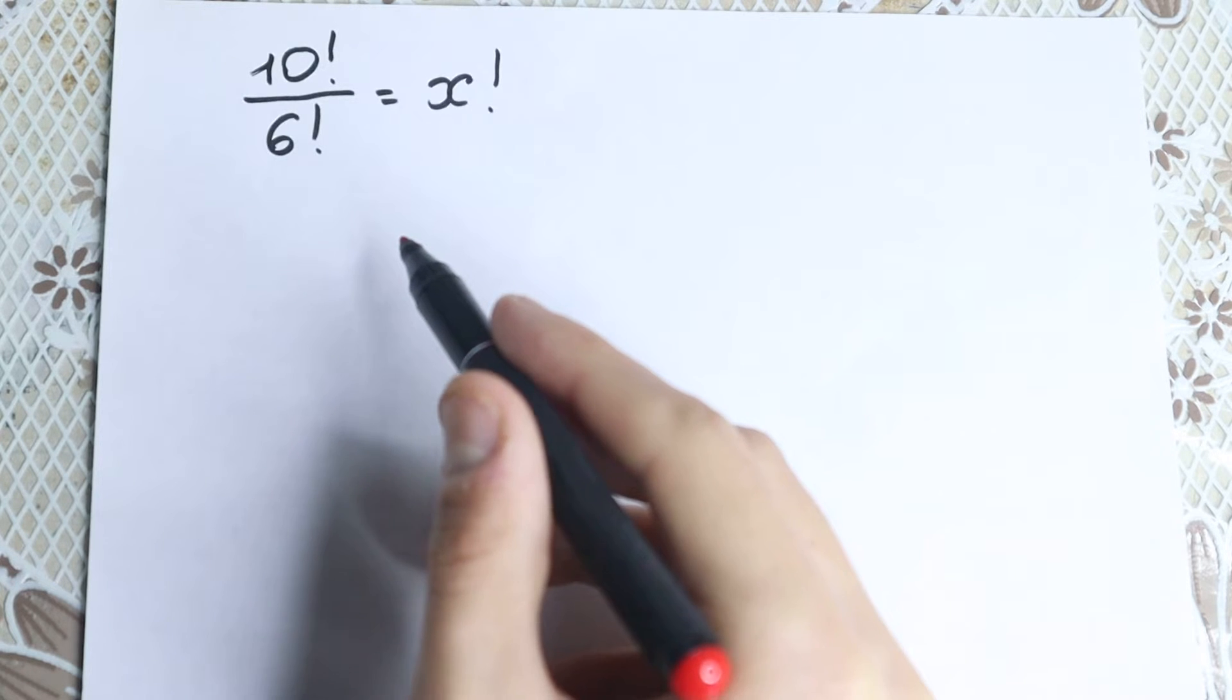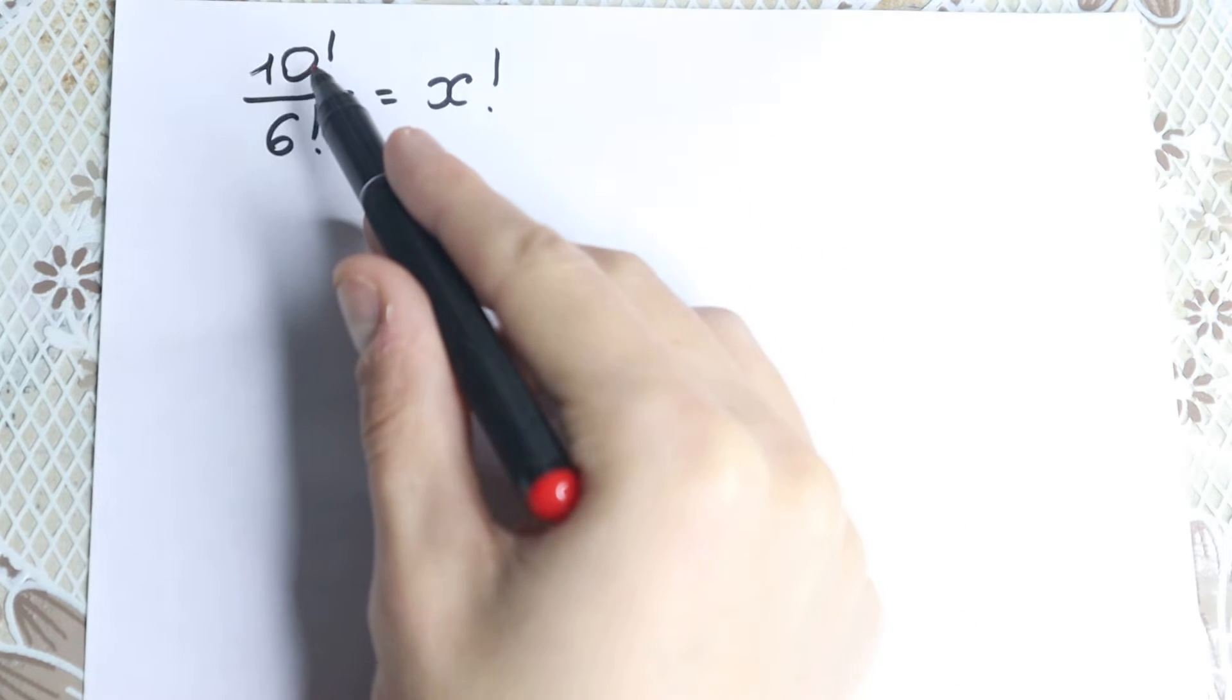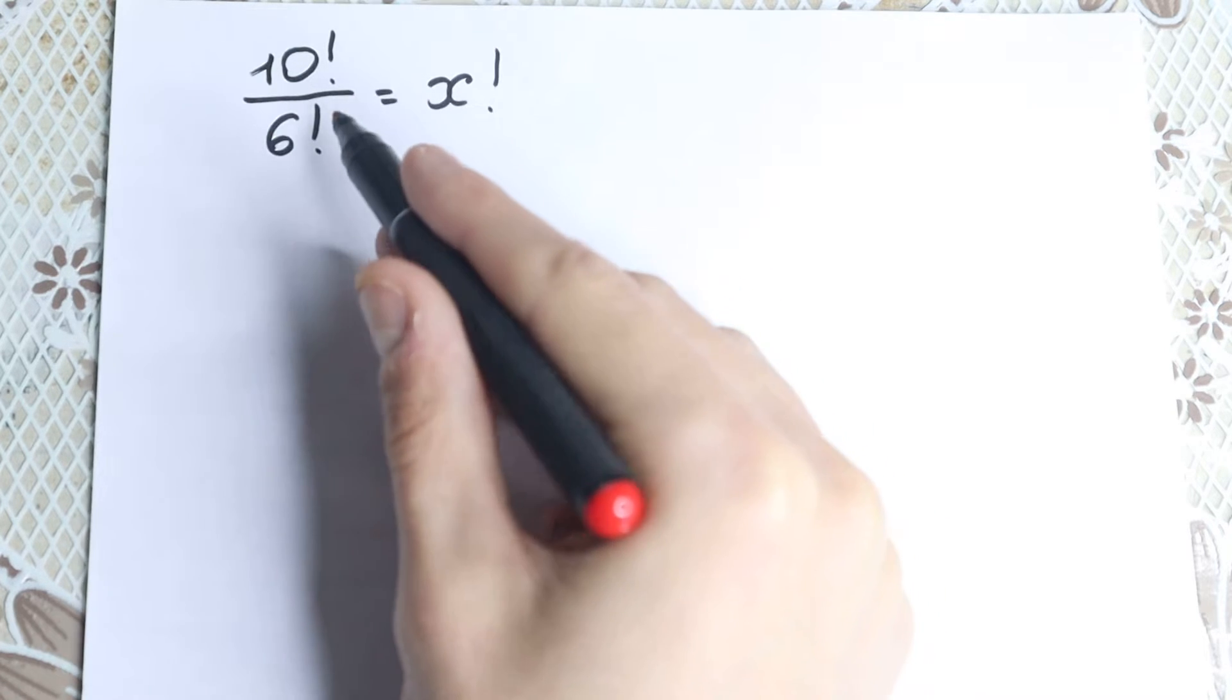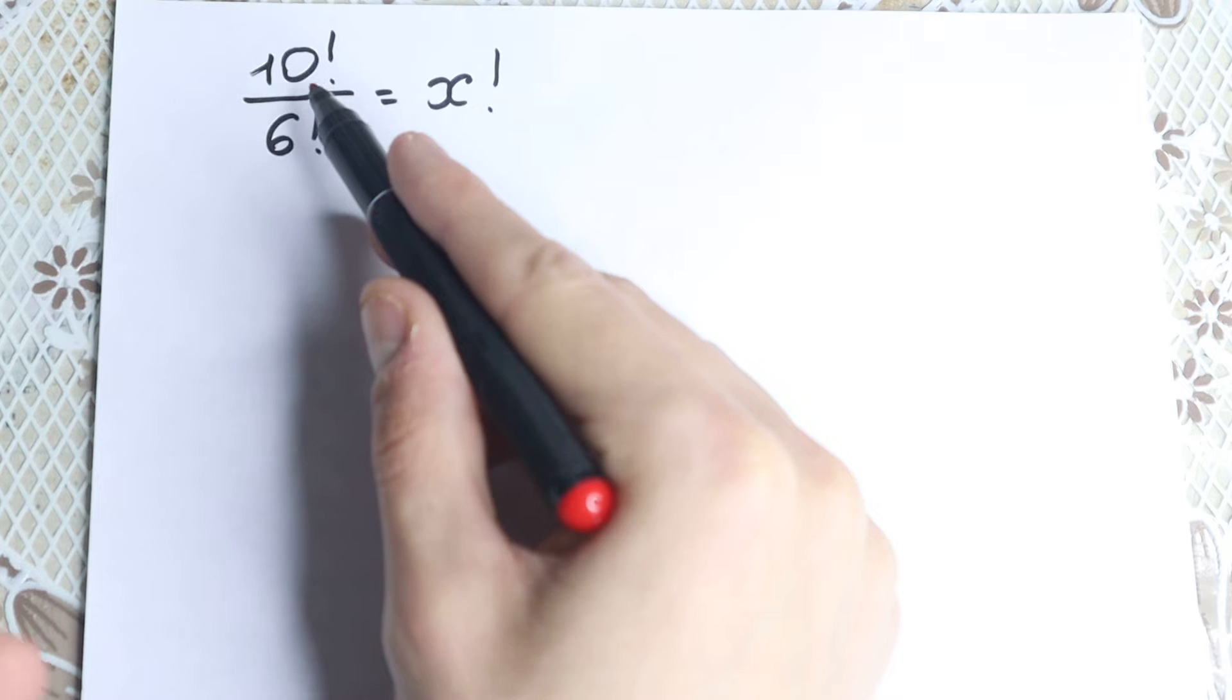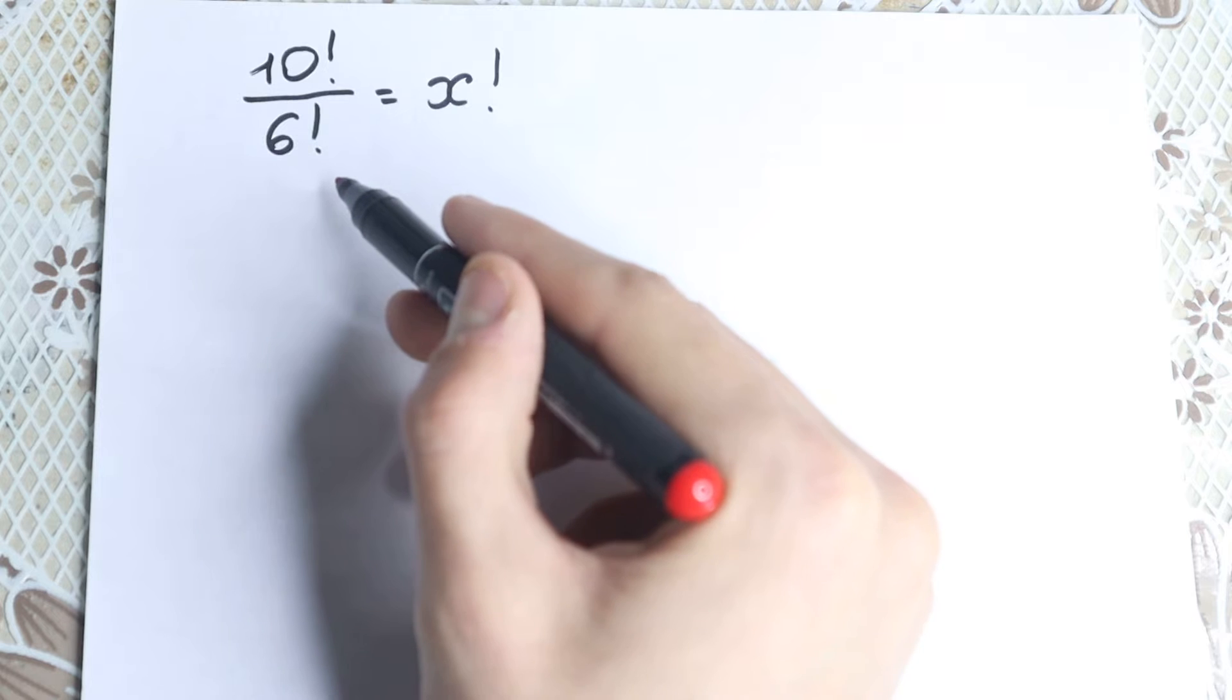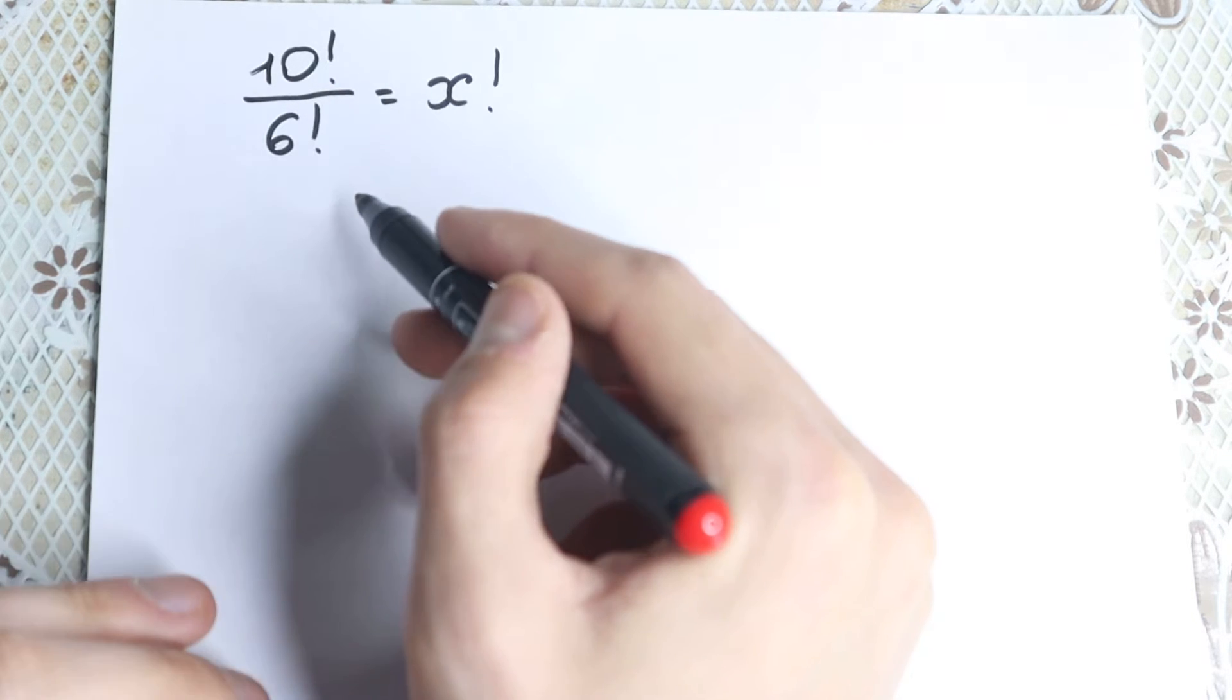First of all, I want to write a main common mistake right here. A lot of students solve it like that. They say that we can cancel this so it looks like 5 over 3 and then x equal to 5 over 3, which is absolutely incorrect because this is like a huge number, 10 factorial. And 6 factorial, this is a huge number as well, so we cannot factor. We need to work with factorials, not with 10 and 6 as a part.